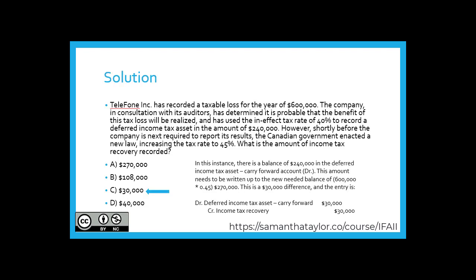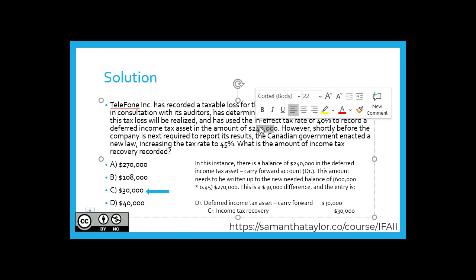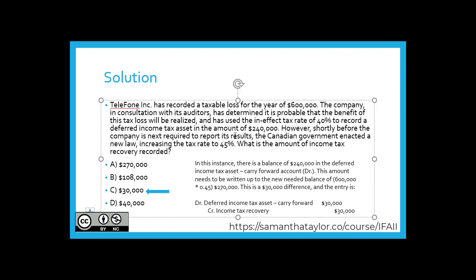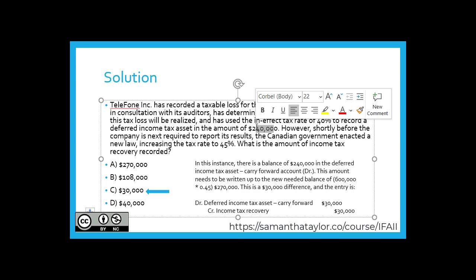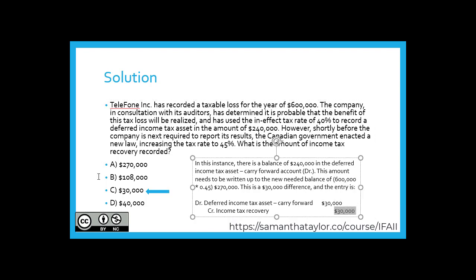If you said C, $30,000, that would be correct. So originally, what would have already been on the books would have been $600,000 times 40%, giving a deferred income tax asset and corresponding recovery of $240,000. When the Canadian government enacted the new tax rate at 45%, a new amount needed to be recovered. 45% times $600,000 equals $270,000, which is the amount of the future expected recovery. $270,000 minus what's already on the books of $240,000 means there's an additional $30,000 in income tax recovery, which is why C is the correct answer.